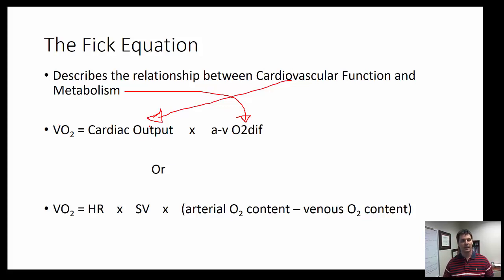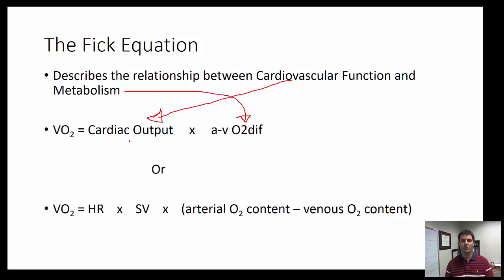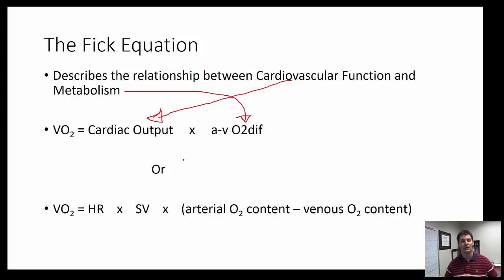The way I think about it — using a Thanksgiving analogy from class — is what determines how much food you eat over Thanksgiving. One factor is how much you load your plate, which we think of as cardiac output, or how much you ultimately take. The other factor is how much of the food you actually consume from your plate. That's how we can view the two components of the Fick equation.